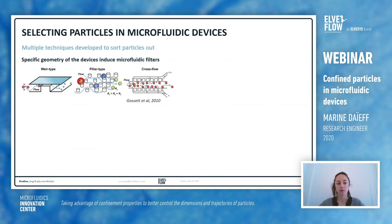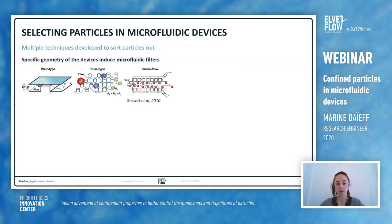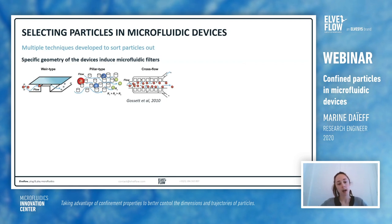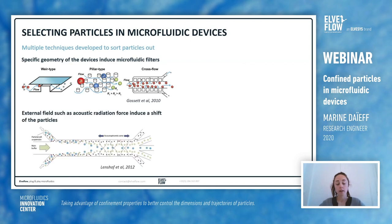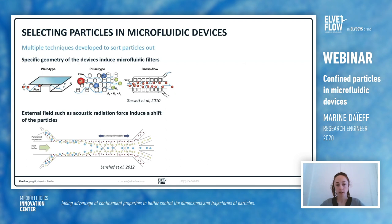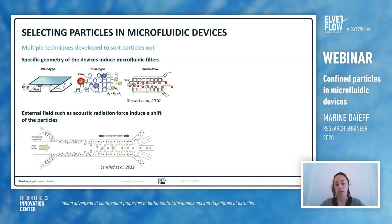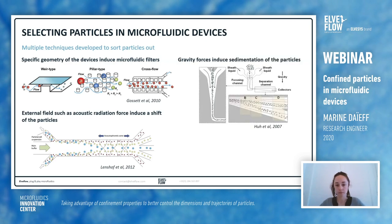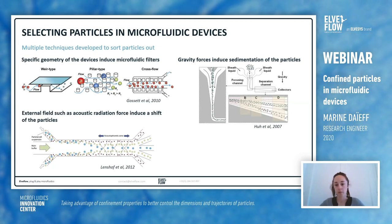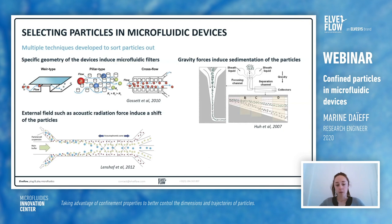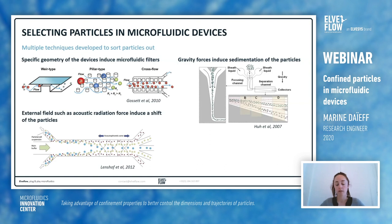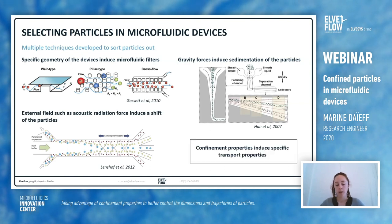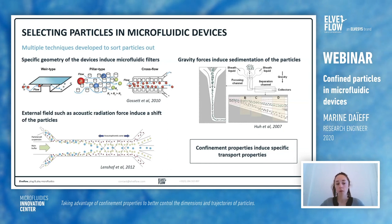To make a brief overview of different techniques used to select particles in microfluidic devices, we can have a specific geometry in the design of the device, for example pillar type, to sort particles depending on their shape. We can also use external fields such as acoustic radiation force to shift particles in the channel and collect them sorted by size at multiple outlets. It's also possible to use gravity forces that induce sedimentation — the bigger the particle, the faster the sedimentation. We will see how it is possible to sort particles depending on their shapes using their confinement.